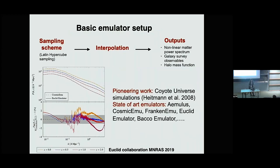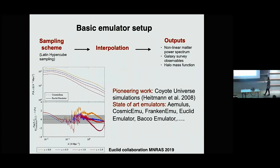Another alternative is emulators — surrogate models for N-body simulations, very useful for determining summary statistics like the power spectrum. The basic emulator setup uses a sampling scheme such as a Latin hypercube, makes some interpolation, and obtains outputs. Examples include Aemulus, CosmicEmu, FrankenEmu, the Euclid Emulator, and the Bacco emulator, depending on the cosmological problem.